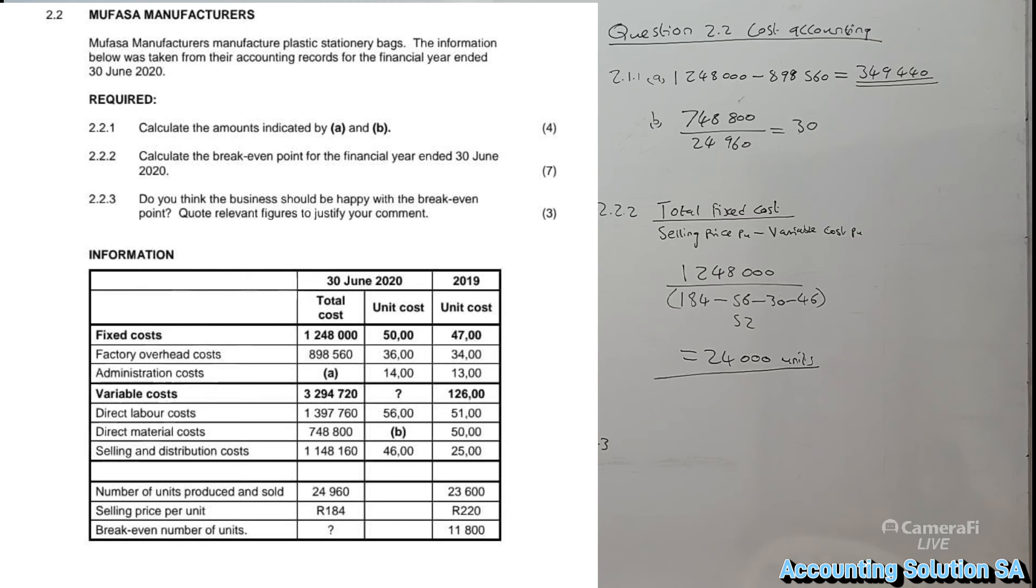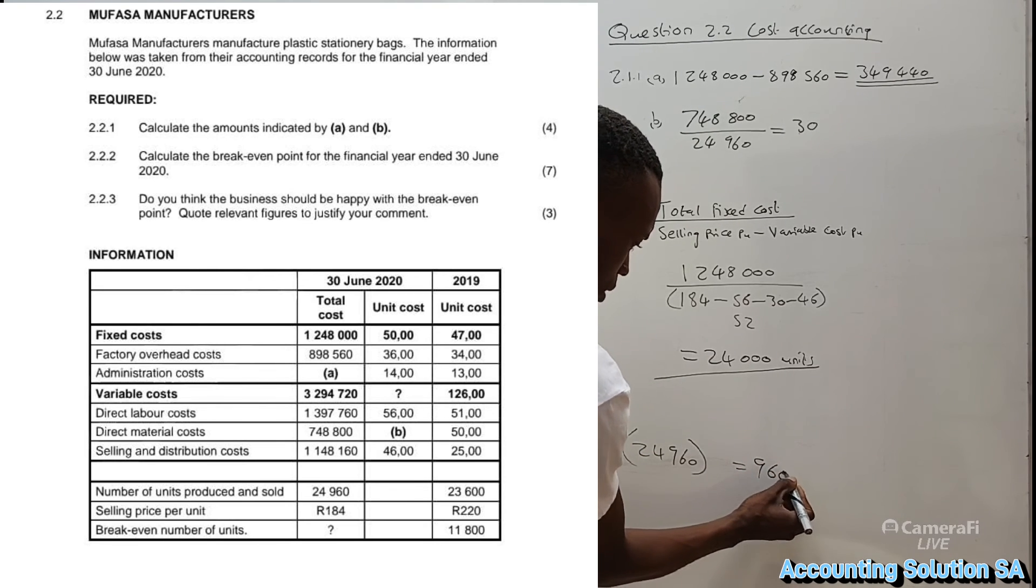How do we compare that? Let's check. The business produced 24,960 units, but the point that they didn't make a profit or loss is 24,000. They exceeded, they produced more than break-even point. The break-even point is 24,000 but they produced 24,960, which means that the profit is only 960 units.